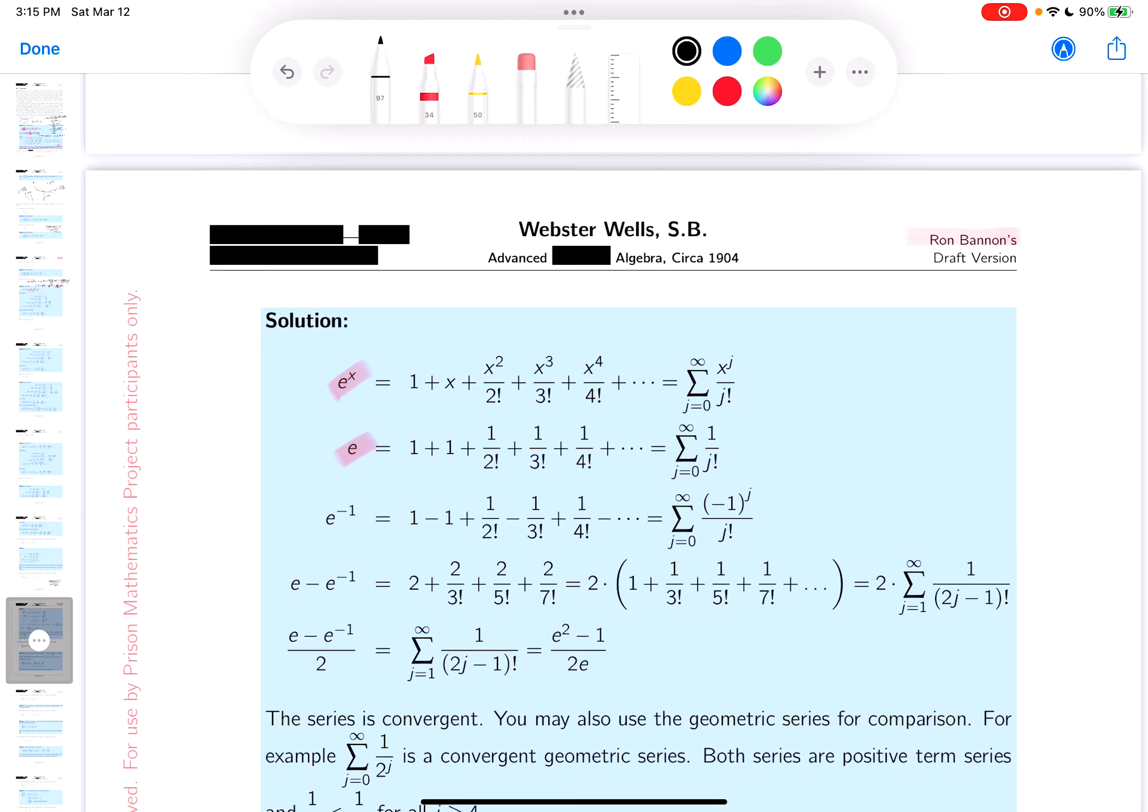And then I put e to the minus 1 in. And what's nice about that is it alternates back and forth. So I put e in e to the minus 1. So again, I'm just plugging in minus 1 over here. So what did you get? 1 minus 1, plus 1 over 2 factorial, minus 1 over 3 factorial, and so on.